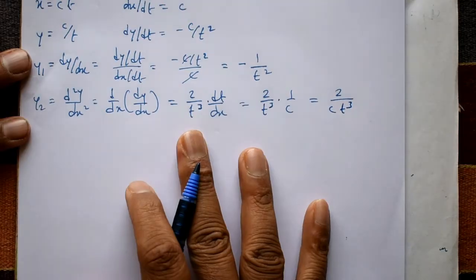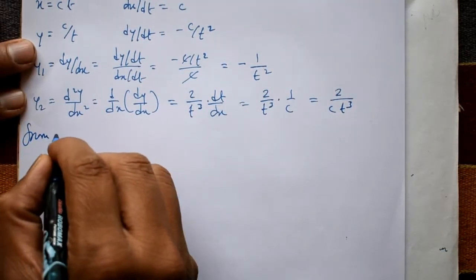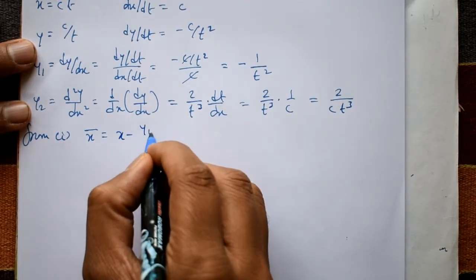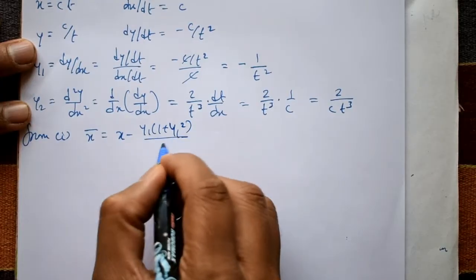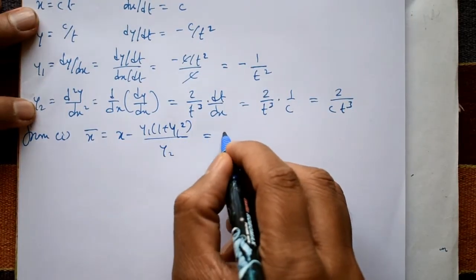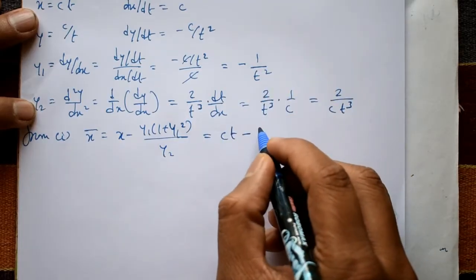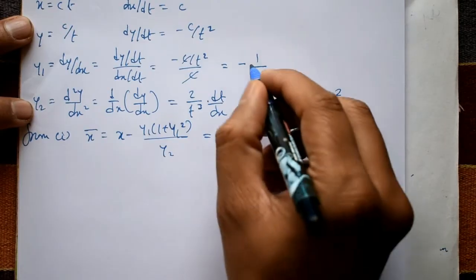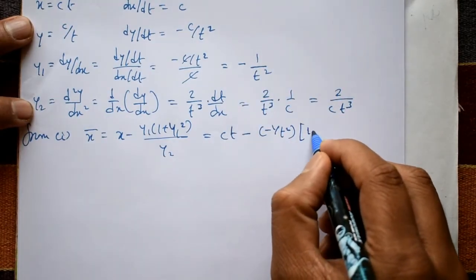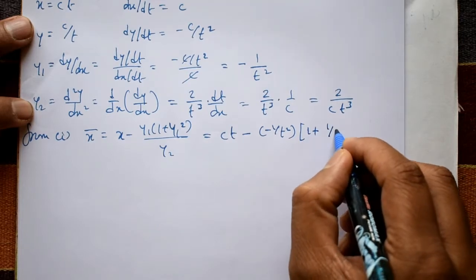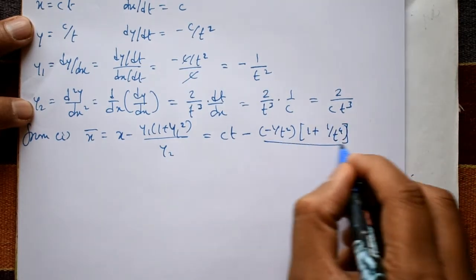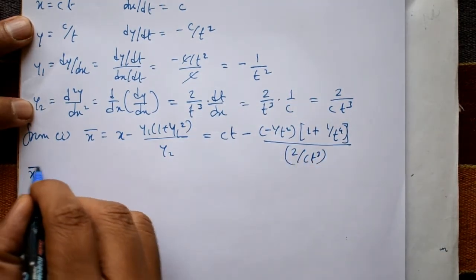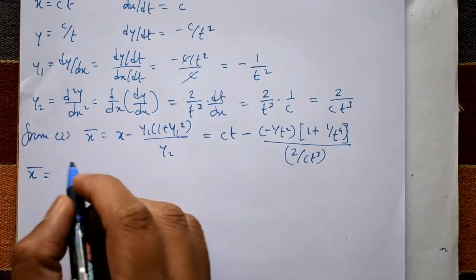From equation number one: x-bar equals x minus y1 times (1 plus y1 squared) divided by y2. Substituting x equals ct, y1 equals minus 1 by t squared, so y1 squared is 1 by t to the power 4, divided by y2 which is 2 by ct cubed.